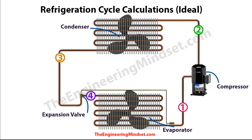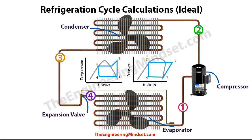To design and analyze a refrigeration cycle, we want to know the thermodynamic properties of the refrigerant at four key points: state one between the evaporator and the compressor, state two leaving the compressor, state three leaving the condenser before the expansion valve, and state four just after the expansion valve before the evaporator. The four main properties we want to know are temperature, entropy, pressure, and enthalpy at all four points.